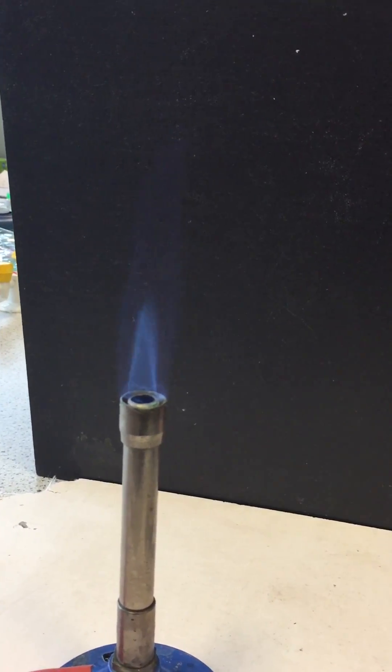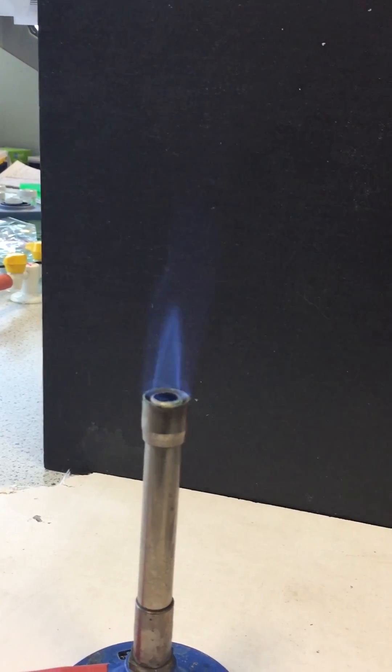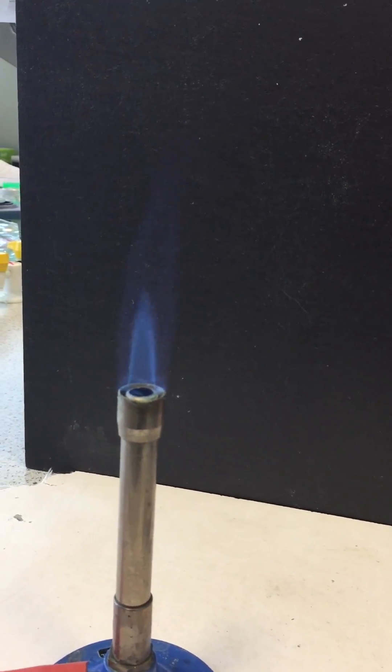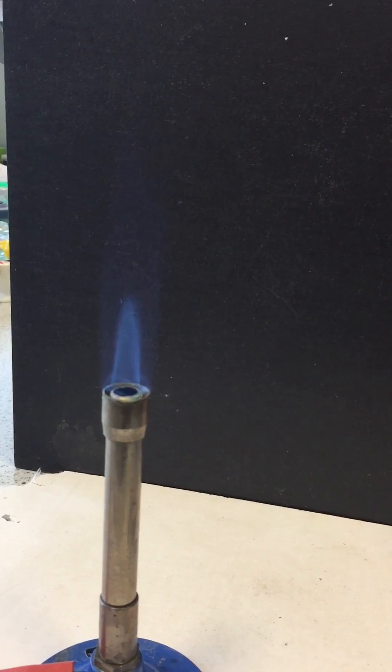You can see that the blue flame has two components: a diffuse outer blue cone and a very hot inner blue cone.